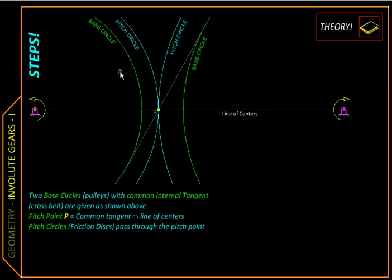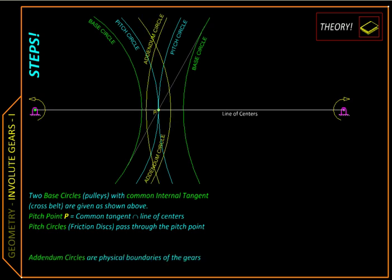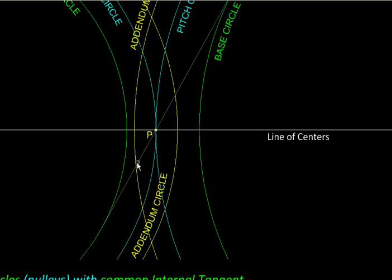But for engagement of the gear teeth, each one needs to reach out into the other's territory and make a contact. So we will draw two more circles with additional material, and therefore they are called as addendum circles, so that they intersect and create a zone between them where the contact can occur.